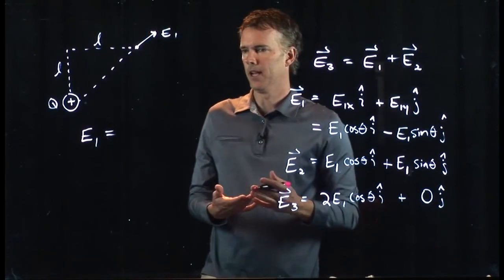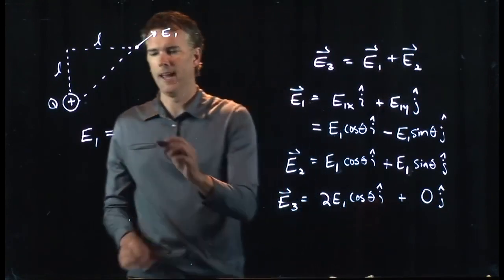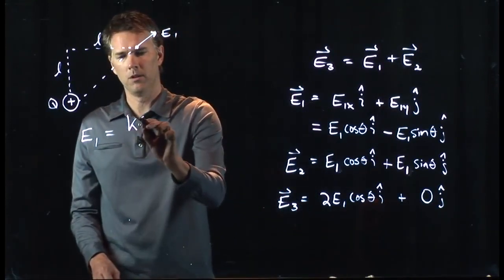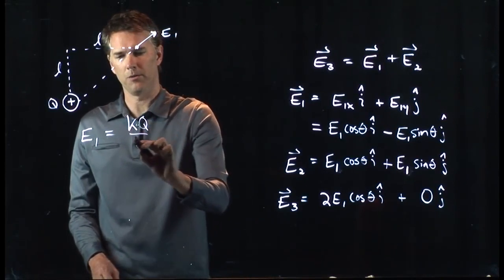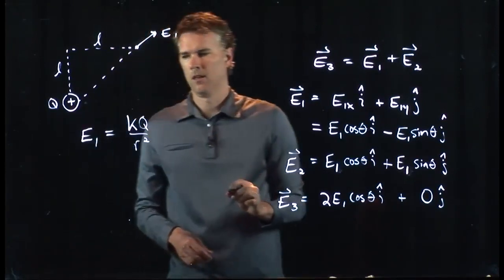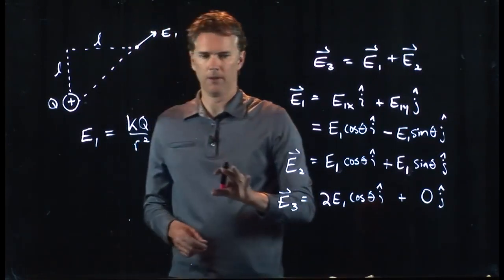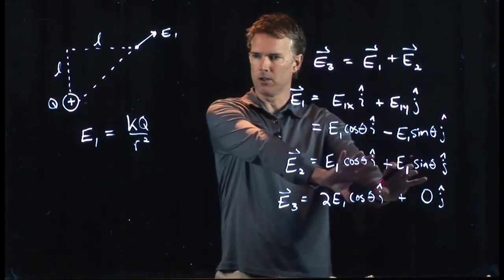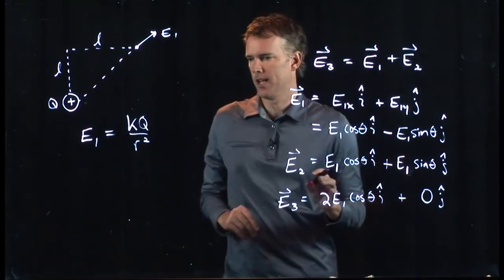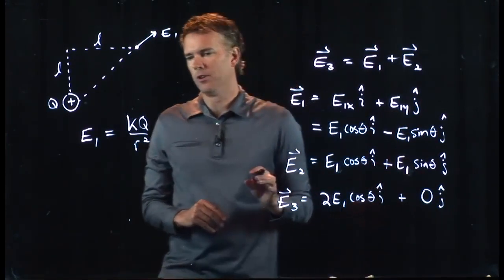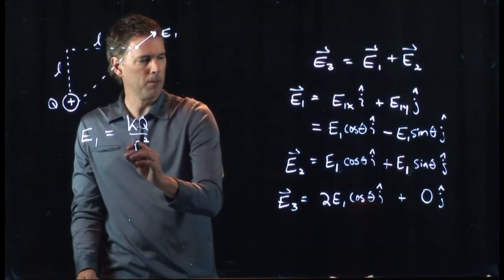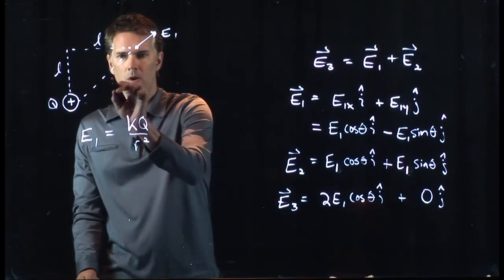What is the strength of E1? Well, we just learned that. It's the field of a point charge. KQ over R squared. Okay. That's the magnitude of E1. We've already taken into account the directions here with the i-hats and the j-hats. And so we just have KQ over R squared for the magnitude.